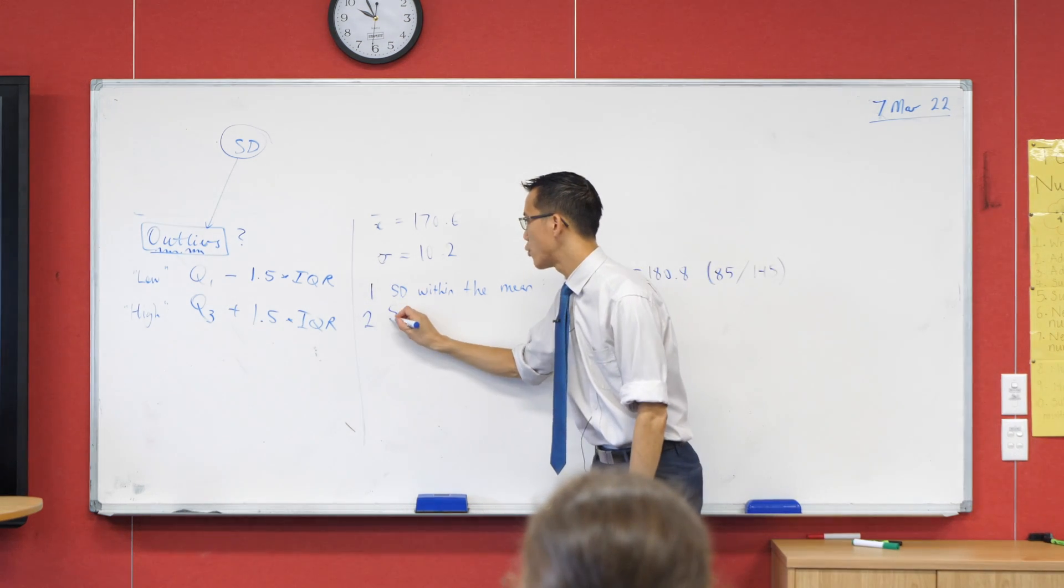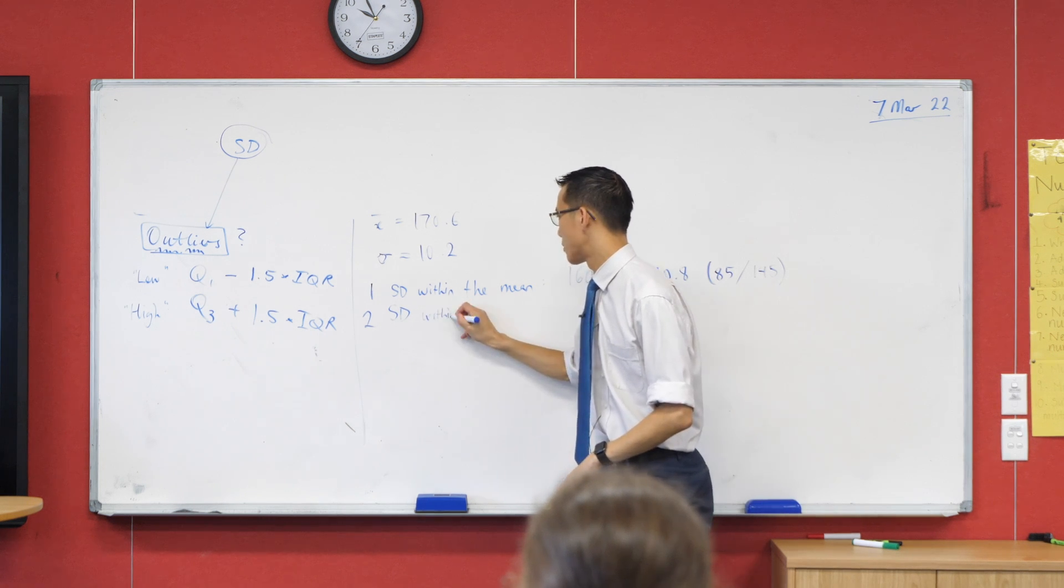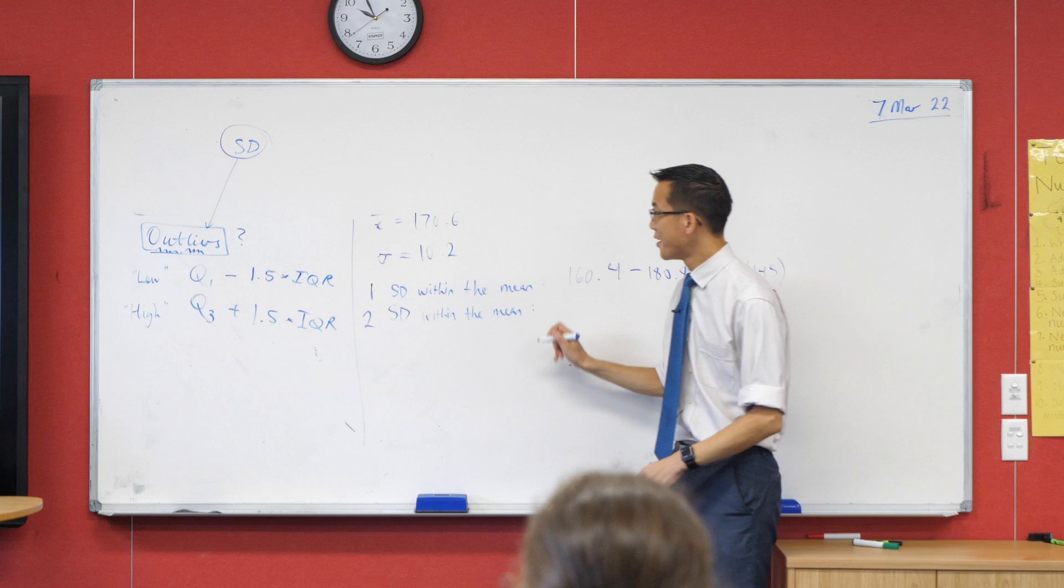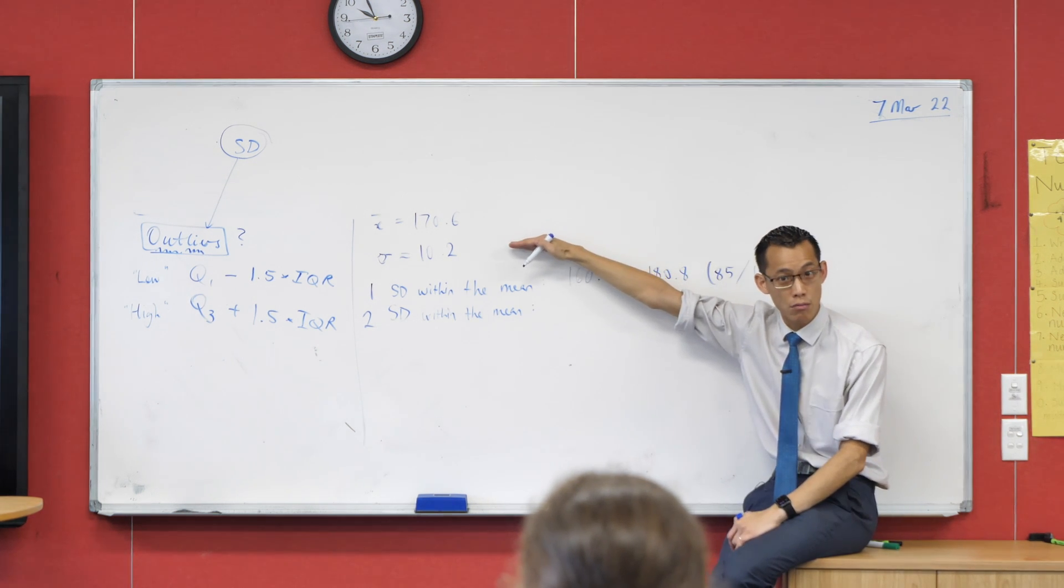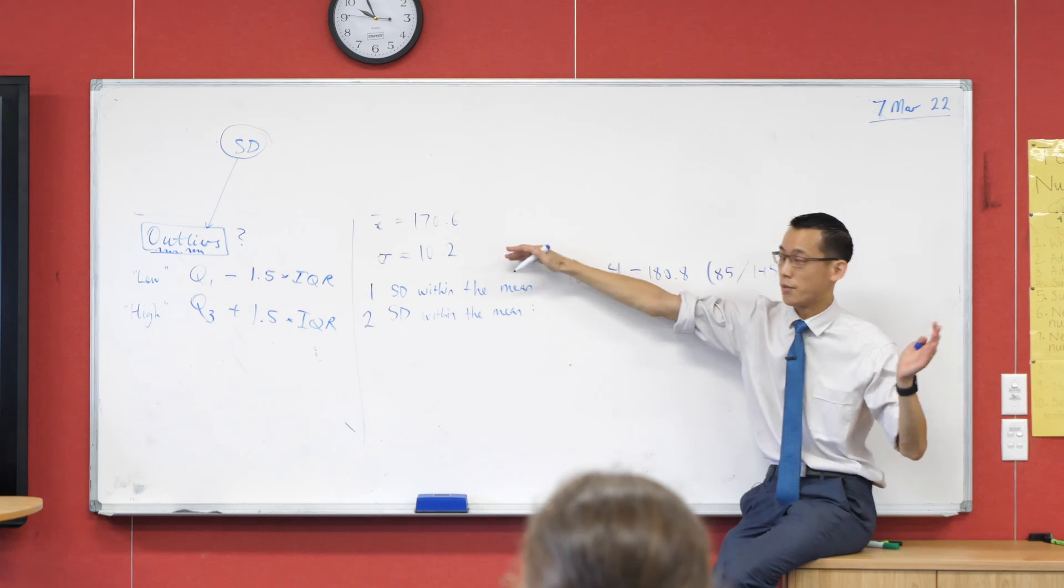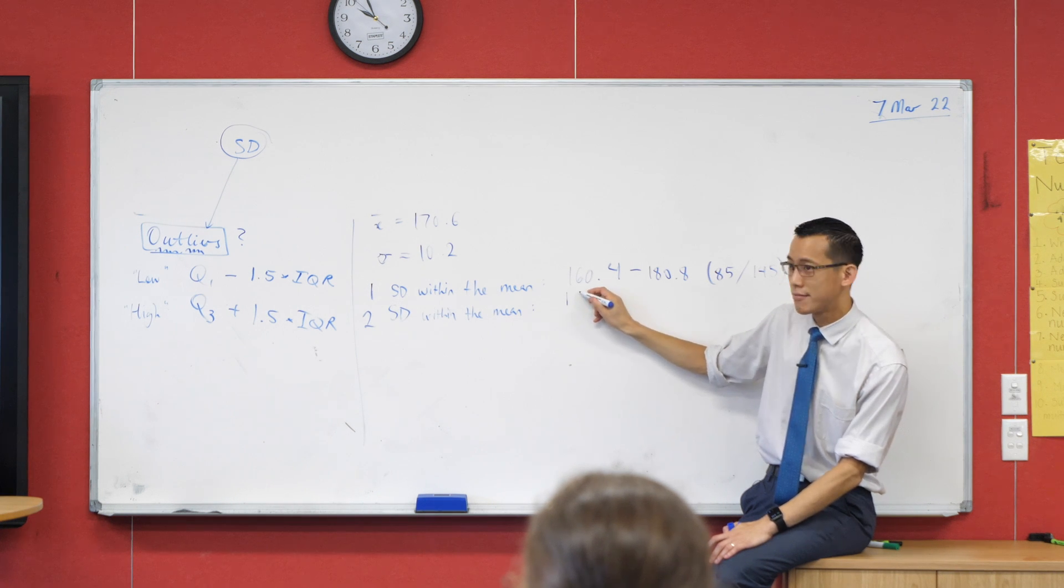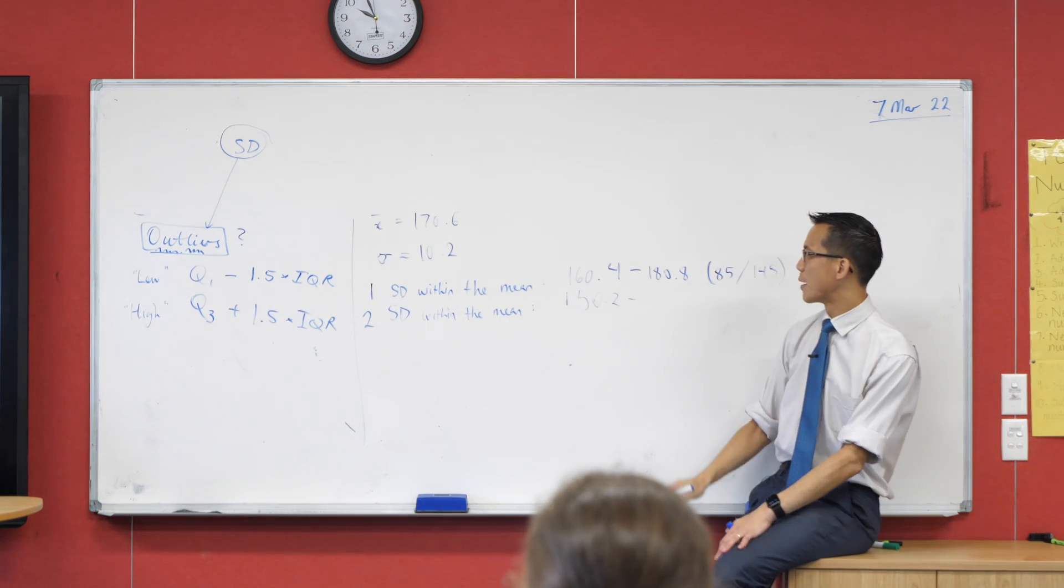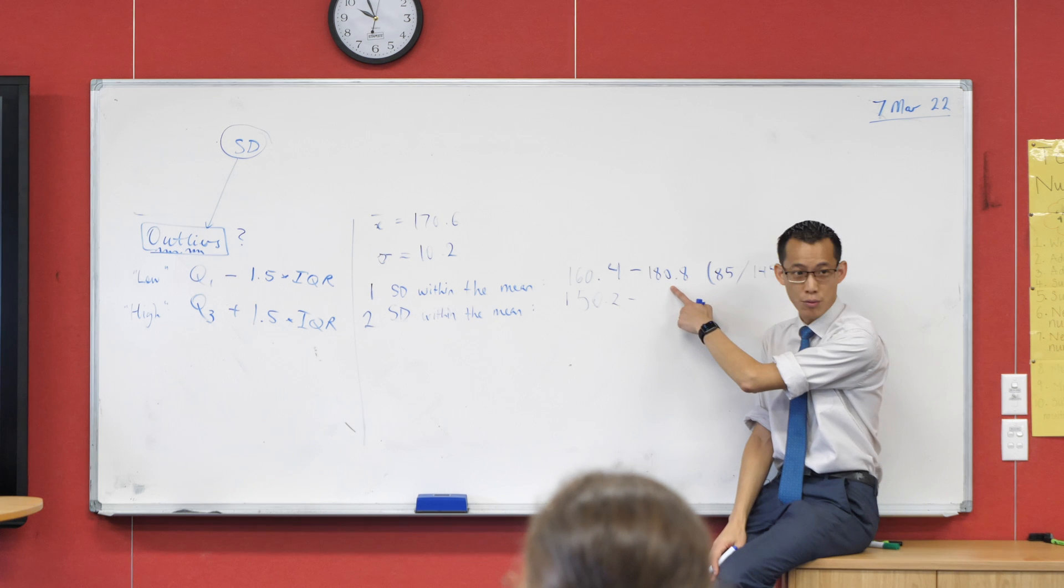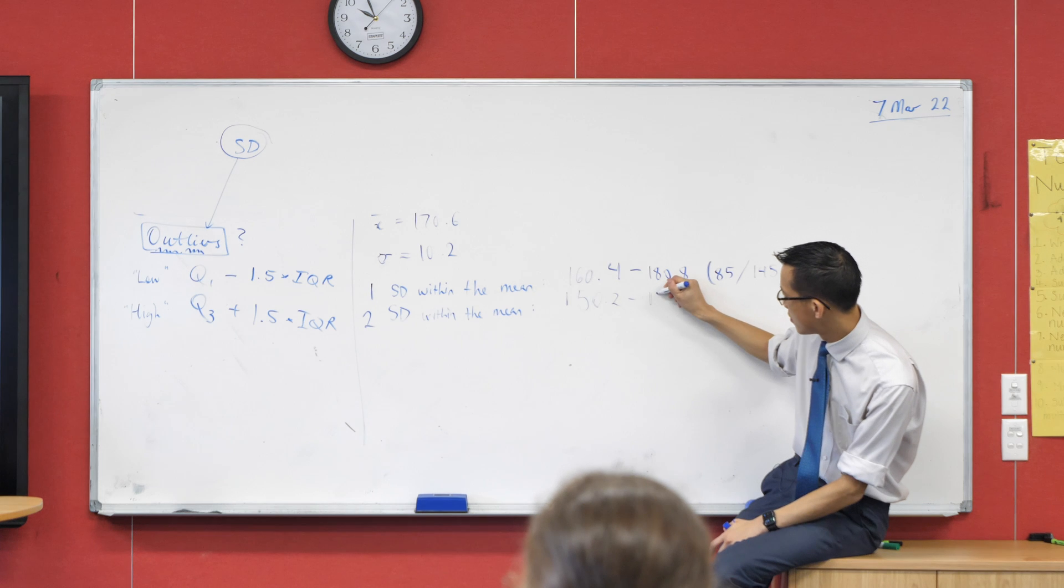Let's go further. If we go two standard deviations away, two standard deviations within mean. So now, I'm going to start from x bar again, but this time I'm going to subtract 20.4, and then I'm also going to add 20.4, right? So this new range will be 150.2, 150.2, all the way up to, it's this plus 10.2, isn't it? That's an easy way of doing it. So that'd be 191.0.